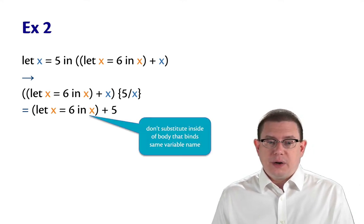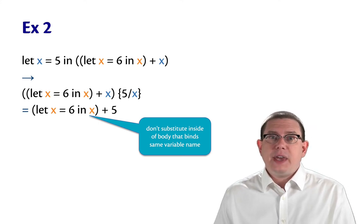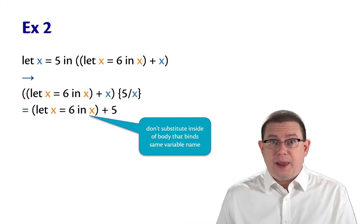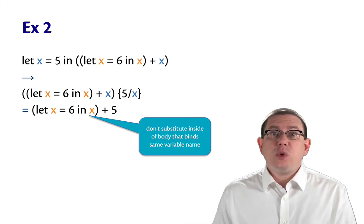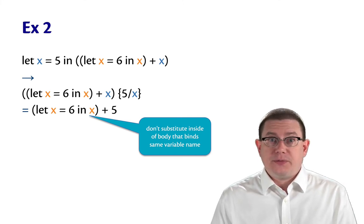So notice what we're not doing here. We're not going to substitute inside of the inner let expression that's binding the same variable name. Why not? Because we want shadowing and scope to work out the way that we have learned them thus far.